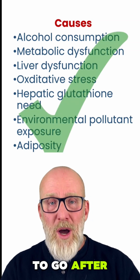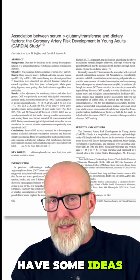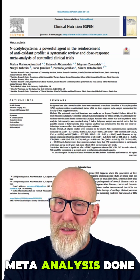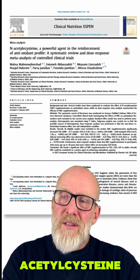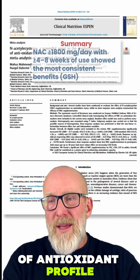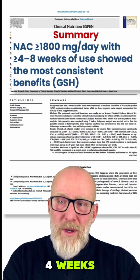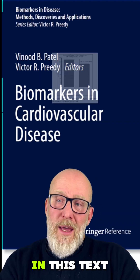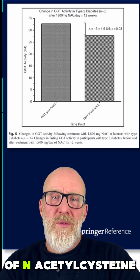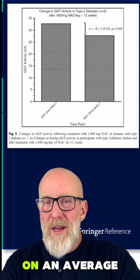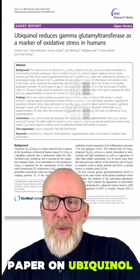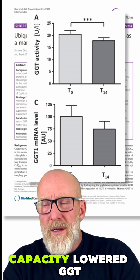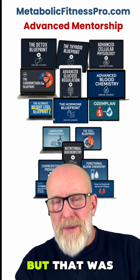To address elevated GGT, you have to go after what might be causing it in the first place. We do know that increased fruit consumption is associated with lower GGT levels. N-acetylcysteine (NAC) is another option — a meta-analysis called it a powerful agent in reinforcing antioxidant profile, suggesting 1,800 mg/day in divided doses for at least four weeks most consistently improved glutathione levels and total antioxidant capacity. A small study of six diabetics using 1,800 mg NAC for 12 weeks found it decreased GGT by an average of about five points. Additionally, a paper on ubiquinol using 150 mg of CoQ10 per day for 14 days found it lowered GGT by about three points, likely due to its antioxidant capacity.